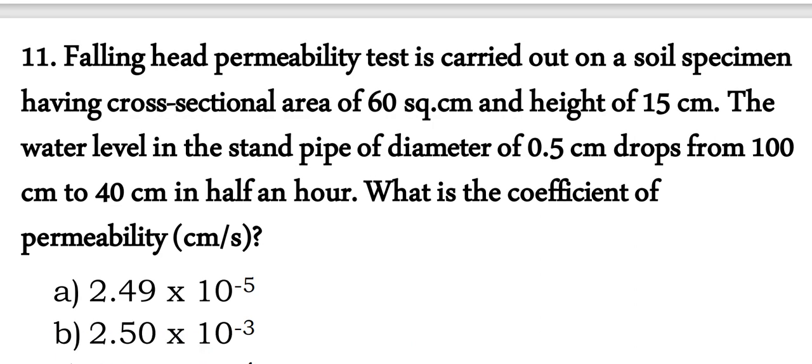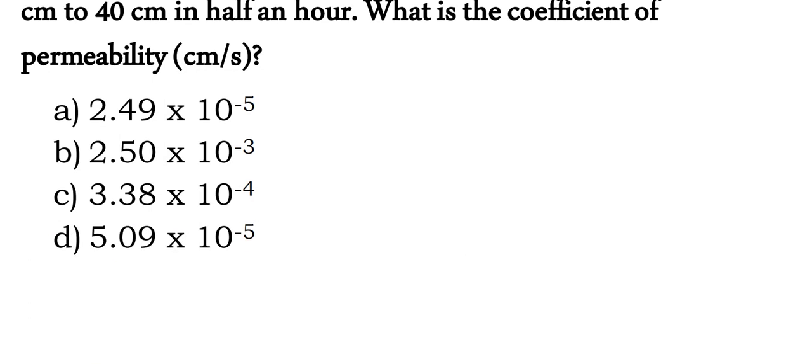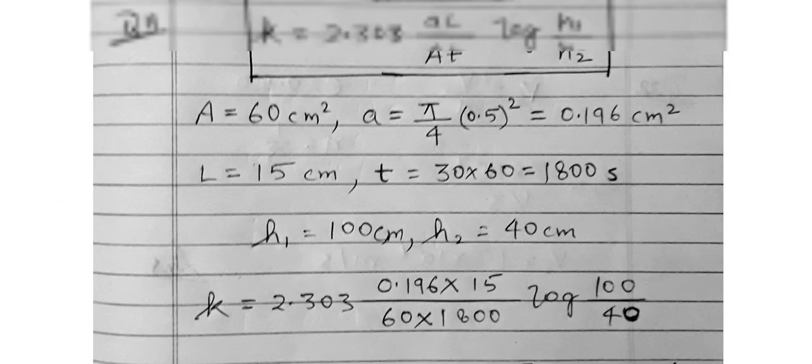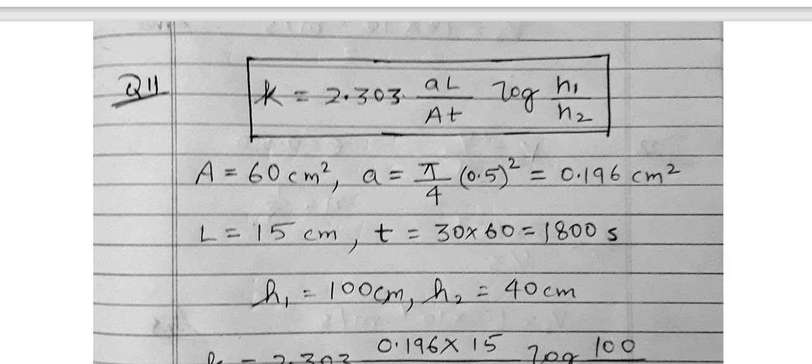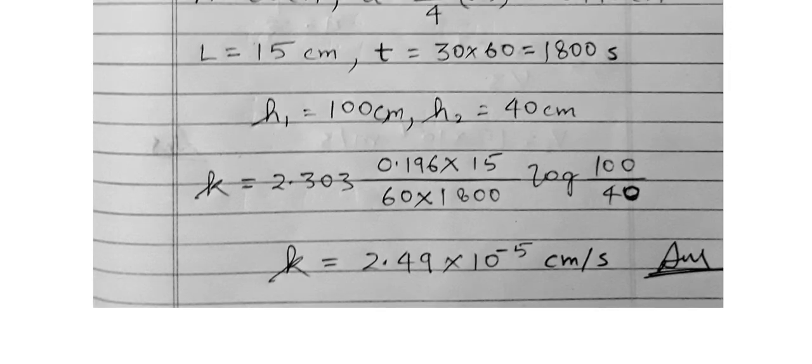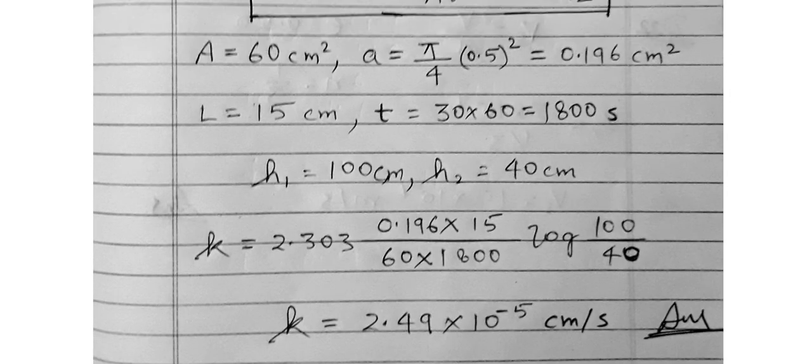Question 11 numerical: a falling head permeability test — given cross-sectional area, height, standpipe diameter 0.5 cm, water level drops from 100 cm to 40 cm in half an hour. Using the falling head permeability formula: k = 2.303 × (aL / AT) × log(H1/H2), substituting the given values, the answer is approximately 2.49 × 10⁻⁵ cm per second.